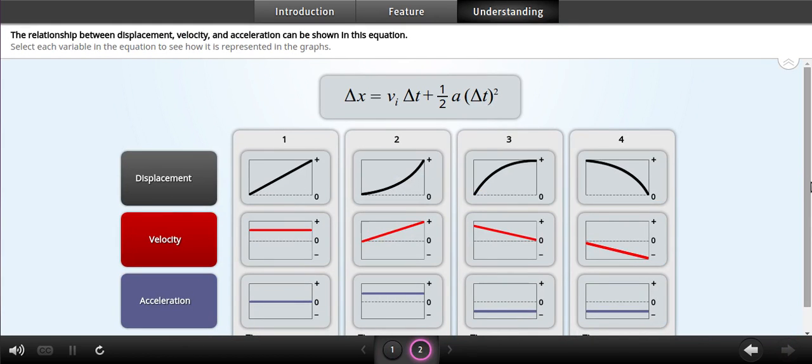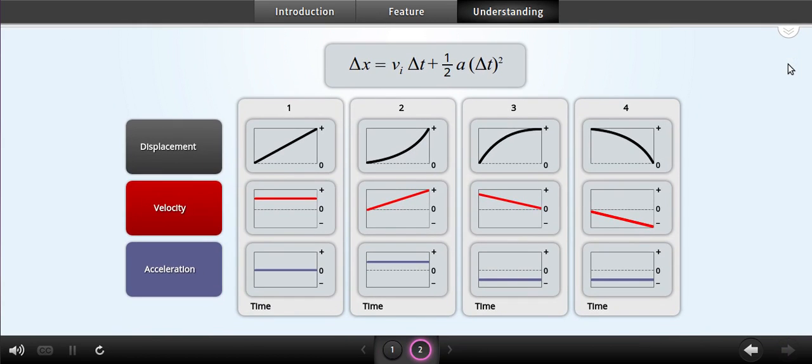For situations with constant acceleration, such as those you saw in the previous understanding activity, displacement can be calculated from velocity, acceleration, and elapsed time using this quadratic equation. Click each variable in the equation to see what it represents.